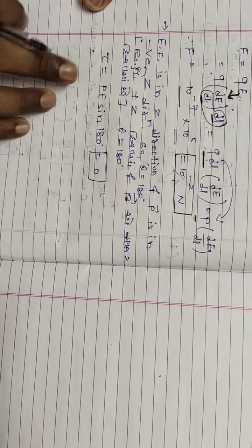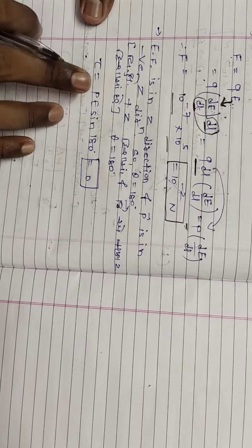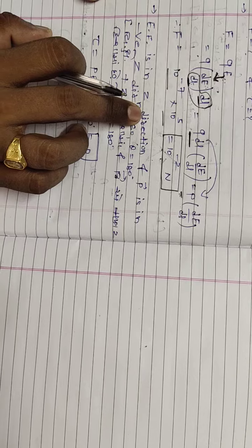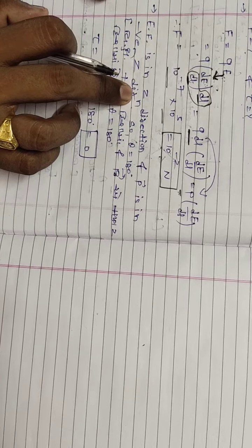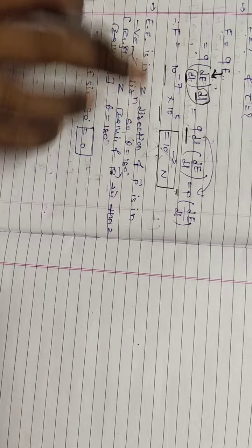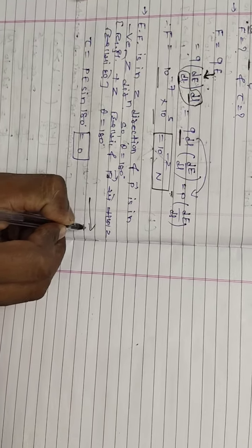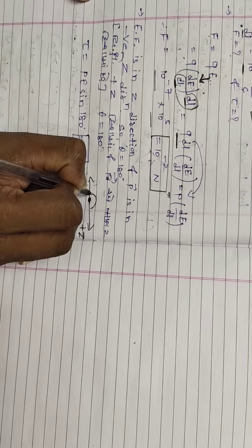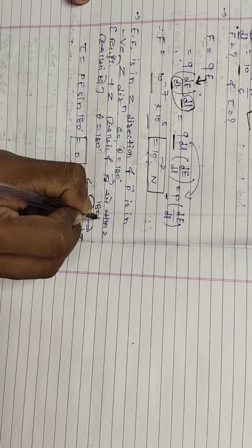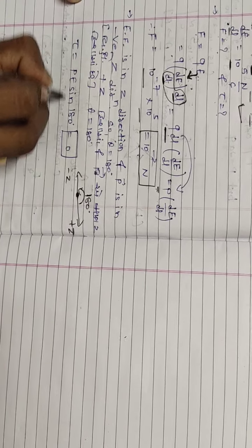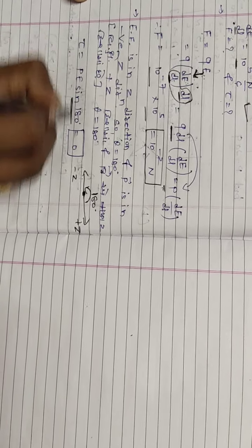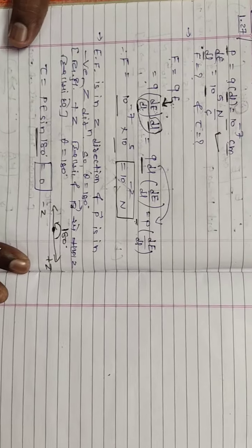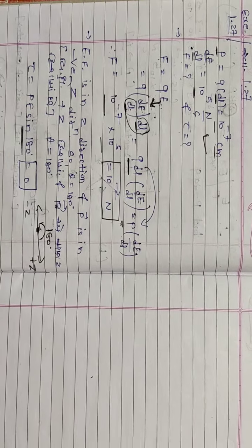For the second part, torque formula is p·E·sin theta, where theta is the angle between p and E. The electric field is in the positive z-direction and p is in the negative z-direction, so the angle between them is 180 degrees. Since sin 180 equals zero, the torque is zero. I hope you liked this video. Please share and subscribe to this channel. Thank you.